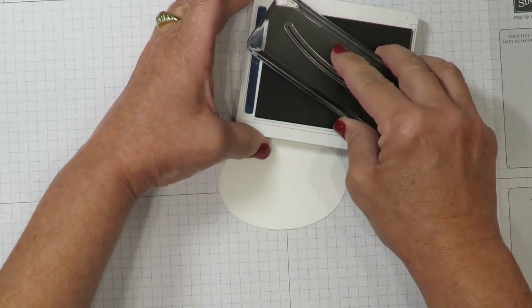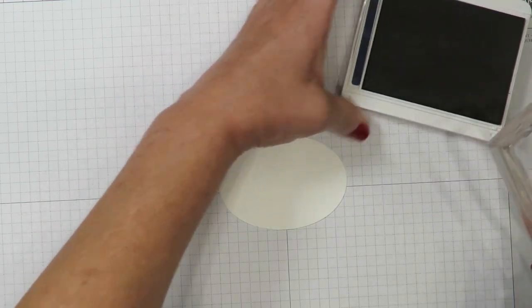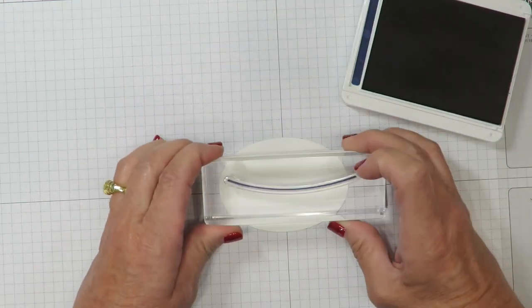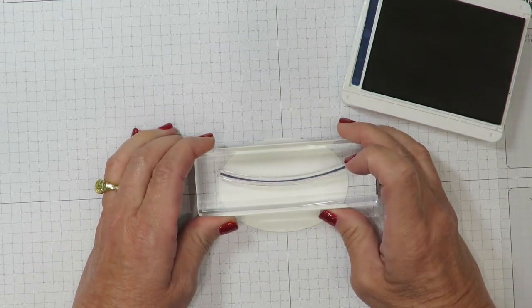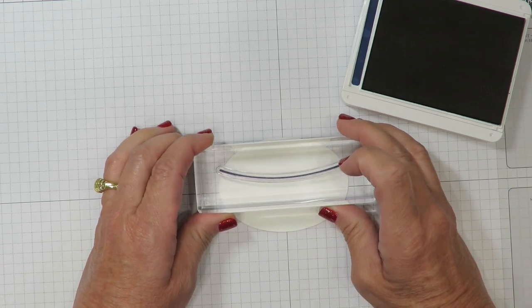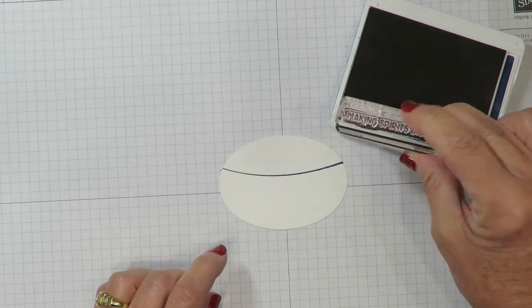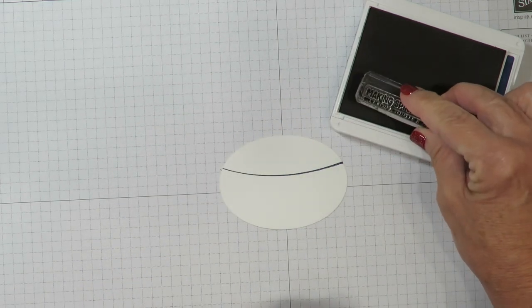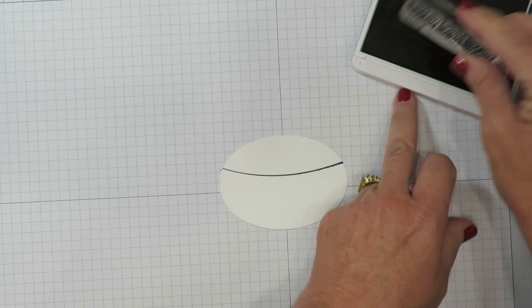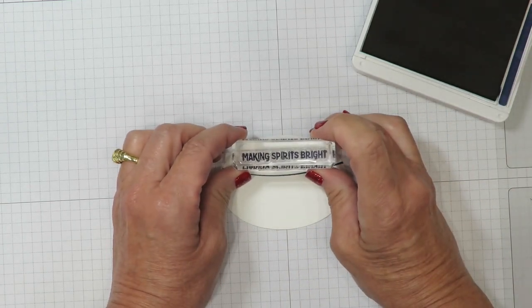So I'm going to ink that up. Photopolymer stamps are going to make it really easy for placement. I'm going to place that down here leaving a little room at the top for my greeting. And while I have that ink pad out, I'll go ahead and ink up the words Making Spirits Bright. All the images I'm using today are all from that exact same stamp set.